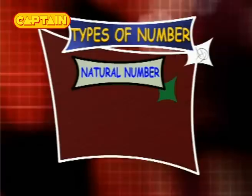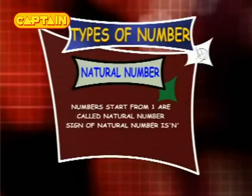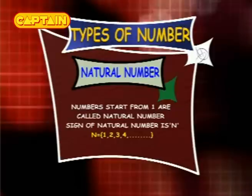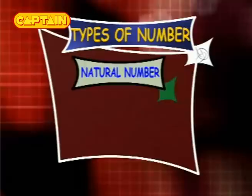Natural numbers: numbers starting from 1 are called natural numbers. The sign of natural numbers is N. N is equal to 1, 2, 3, 4, and so on.